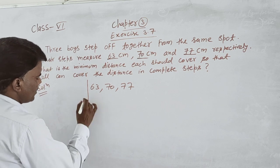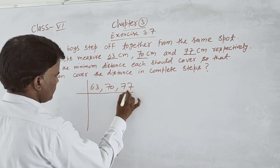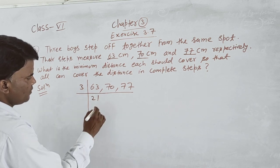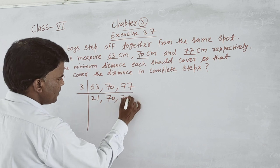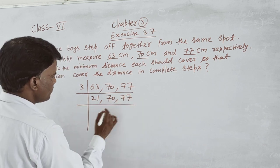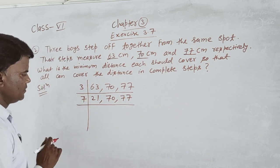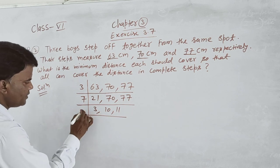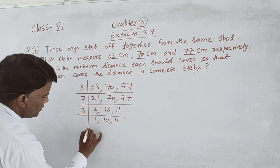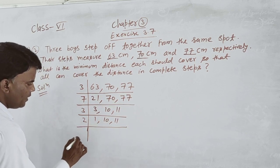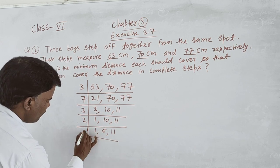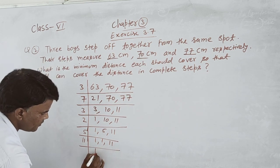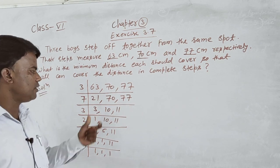We divide by 3, getting 21, 70, 77. Then by 7, and continue with 5 and 11 until all numbers are reduced to 1.